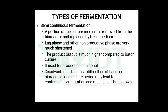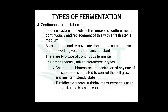The third type is semi-continuous fermentation. A portion of the culture media is removed from the bioreactor and replaced with fresh media. In this type, the lag phase and non-productive phase are very much shortened, and the product output is much higher compared to batch culture. It is used for the production of alcohol, but disadvantages include technical difficulties in handling the bioreactor — long culture periods may lead to contamination, mutation, and mechanical breakdown.